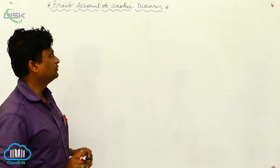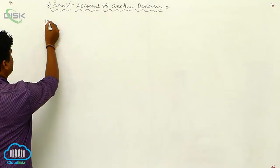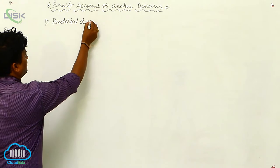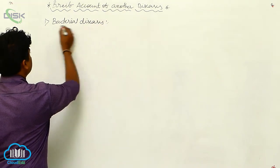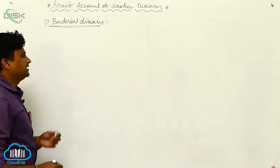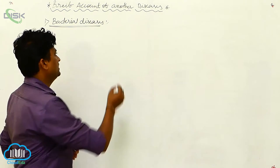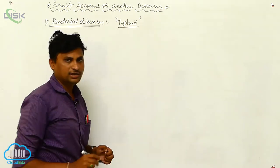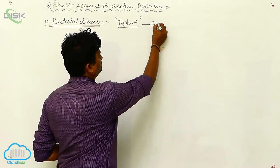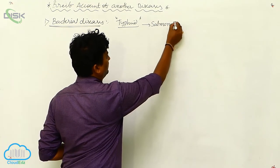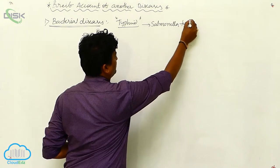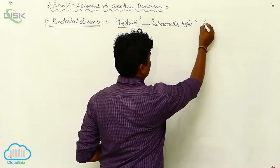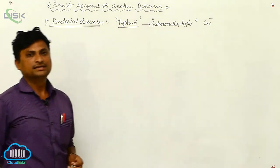First, we are going to look at bacterial diseases. In tropical areas, people frequently suffer from bacterial diseases. The first one is typhoid. Typhoid disease is caused by the bacteria Salmonella typhi, which is a gram-negative bacteria.